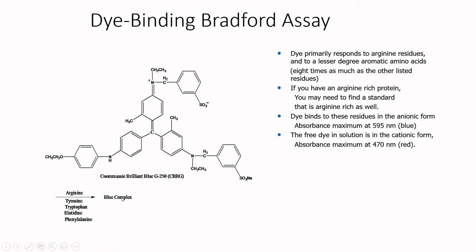Here's the thing — in our amino acid sequence, we may have more or less arginine in that protein, and depending on the situation, you could have a really arginine-rich protein, and depending on what you make your standard curve with, you could be misreading the amount of protein in that sample. When the dye is bound to arginine or to a lesser extent tyrosine, tryptophan, histidine, or phenylalanine, it creates a blue absorbance at 595 nanometers, while free dye has an absorbance at 470 nanometers.